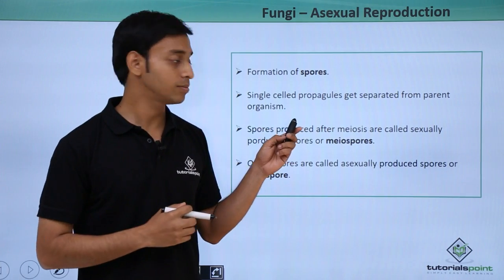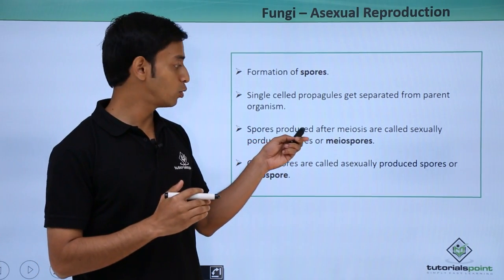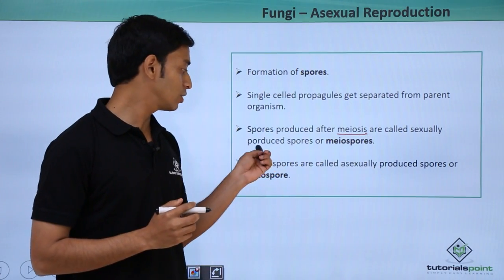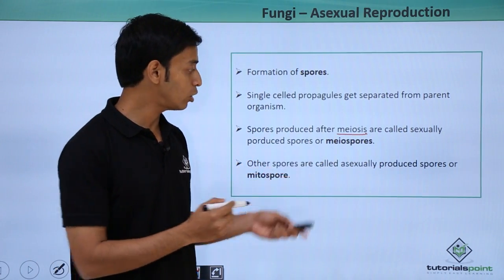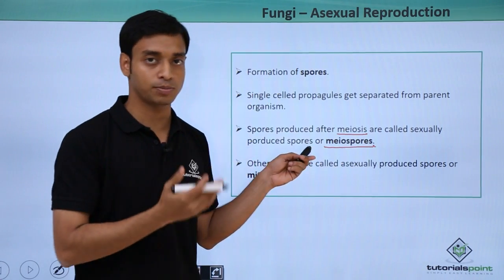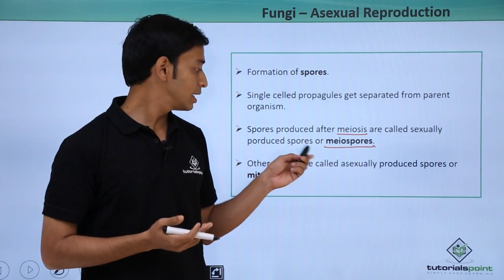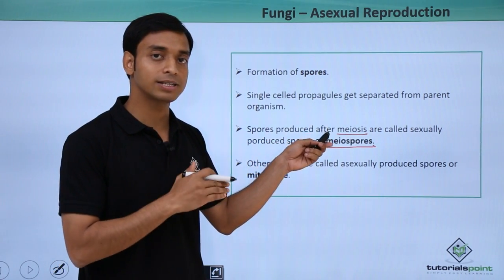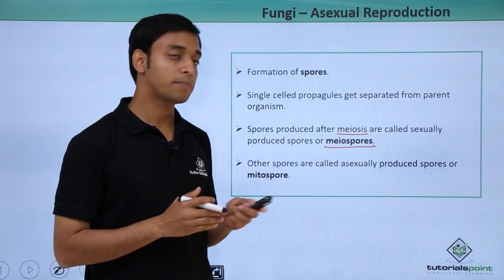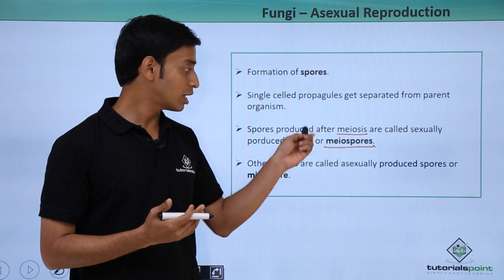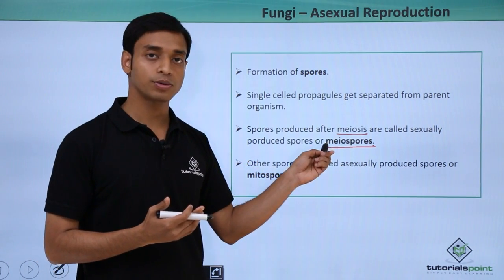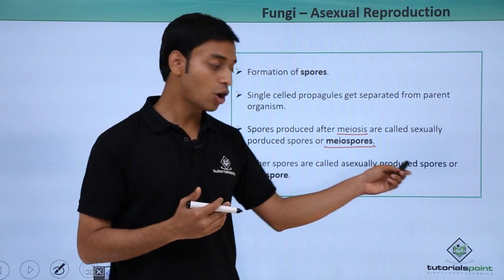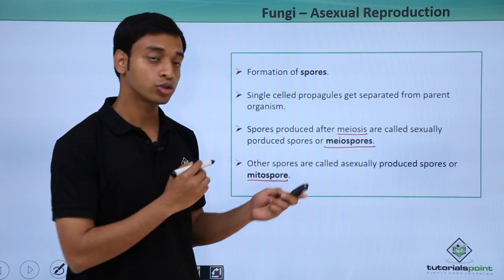If spores are produced after the process of meiosis, they are known as sexually produced spores, also called meiotic spores. The other type of spores, which are not produced through meiosis, are known as asexually produced spores or mitospores. These are the two major kinds of spores mostly formed.